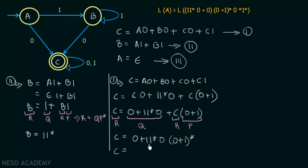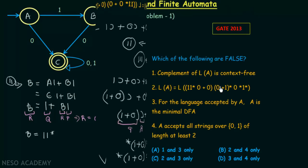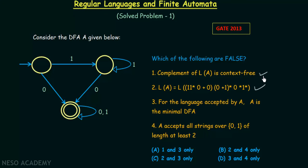This is the regular expression we get for final state C. Comparing it with the regular expression given in statement 2, it looks the same — (0 + 1·1*·0)·(0+1)* is equivalent to the given expression. So we see that this DFA can be expressed using that regular expression, and statement 2 is true. Both statements 1 and 2 are true.